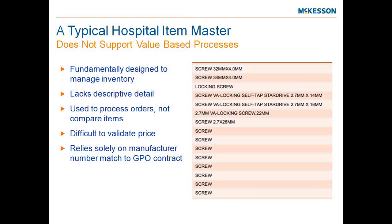When I look at an MMIS system — having been at McKesson on and off for 20 years — the descriptions in the item master are really fundamentally designed to manage inventory. In many cases, they lack descriptive detail. Many systems provide descriptions in only 35 to 50 characters. How do we put enough information in there so end users know what they're looking for? It's really used to process orders, not to compare items. We've used commodity codes, UNSPSC codes, which have been beneficial, but we're probably still not granular enough to do product comparisons or validate price.